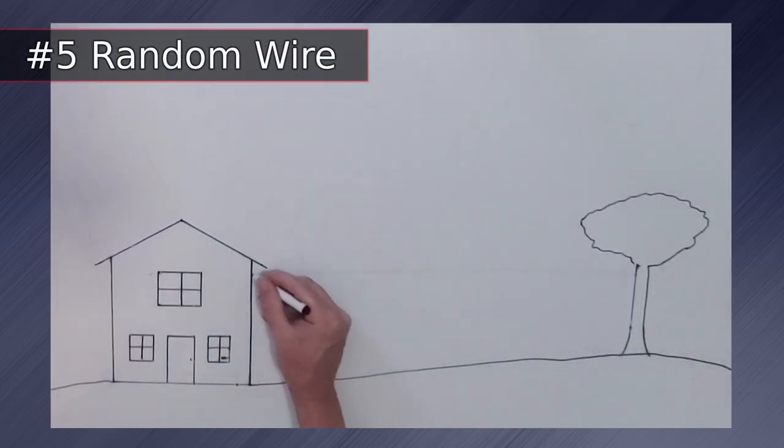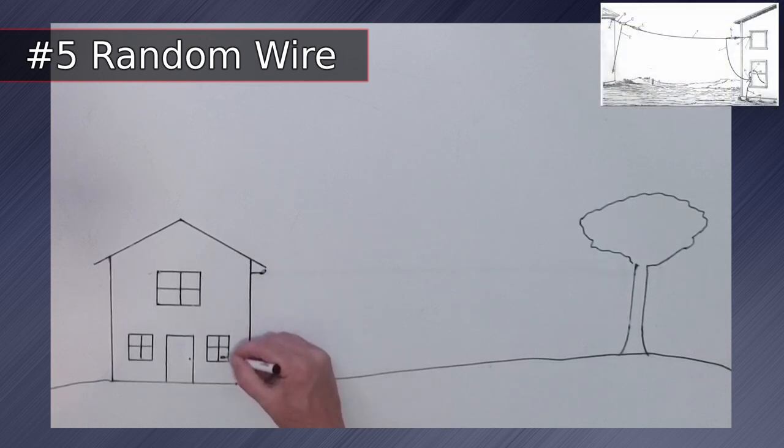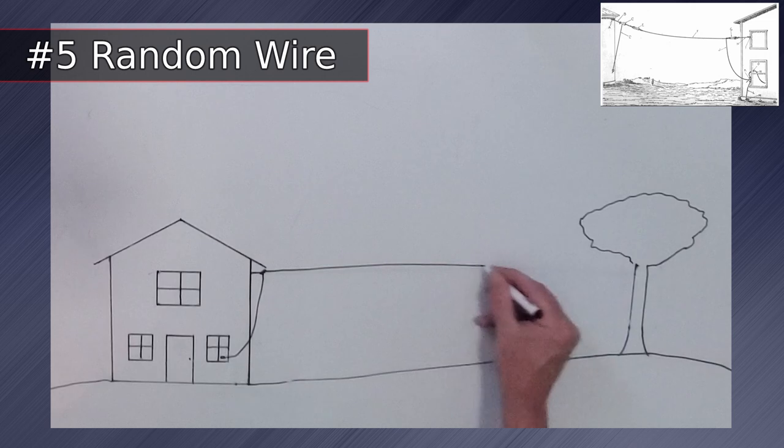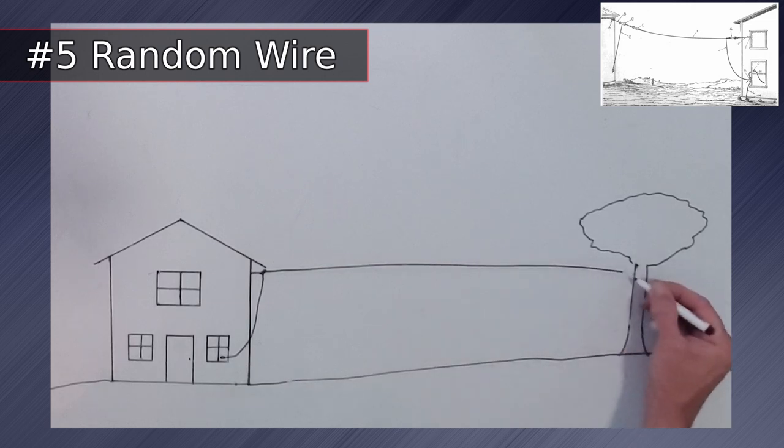Starting out the list at number 5 is the tried and true random wire antenna. The idea here is to get some wire in the air. Length doesn't matter here. We are just trying to get the best reception we can with minimum effort.